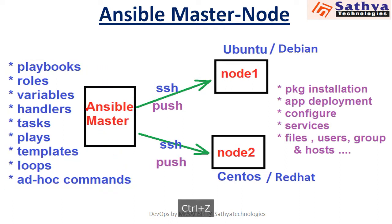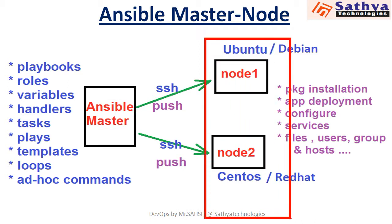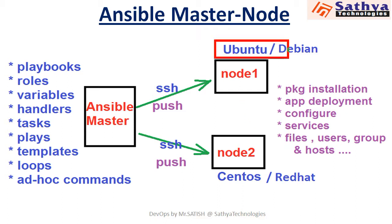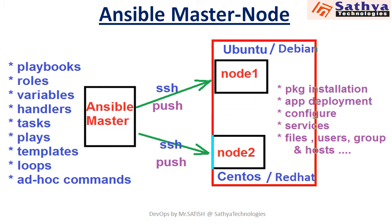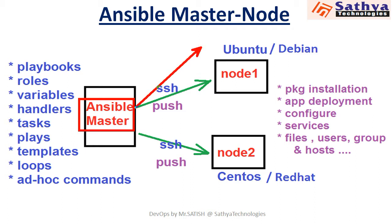The Ansible Master will prepare different configurations or scripts, and through those scripts we can maintain multiple nodes. This works irrespective of the node platform — whether Ubuntu, Debian, CentOS, or Red Hat — we can manage from this central location. So Ansible Master can perform orchestration to maintain multiple nodes.